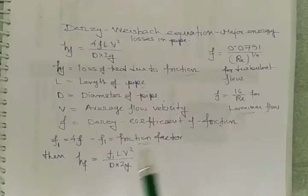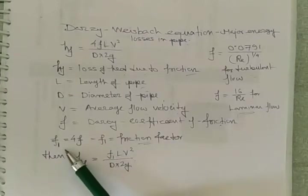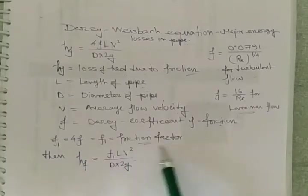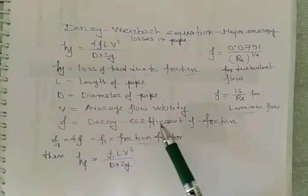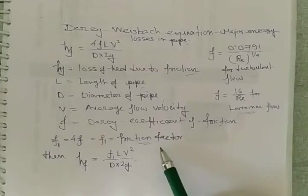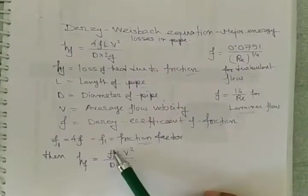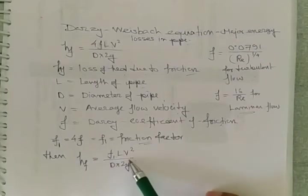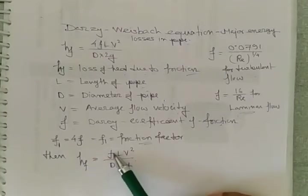Small f is Darcy coefficient of friction. Here you will get another terminology called friction factor, F1 is equal to 4 times coefficient of friction. You can replace this Darcy-Weisbach equation by using F1 also. Then equation becomes hf is equal to F1 L V squared over D into 2g.